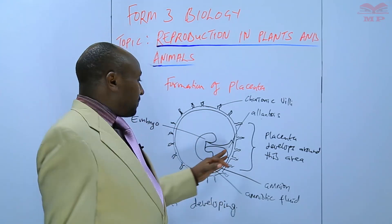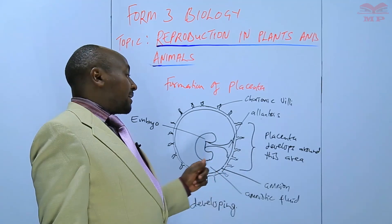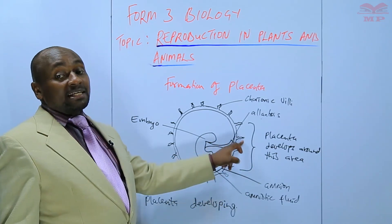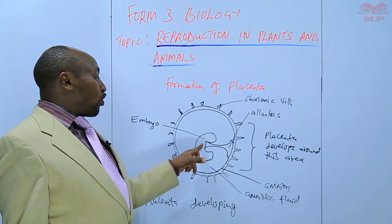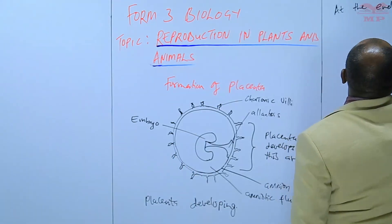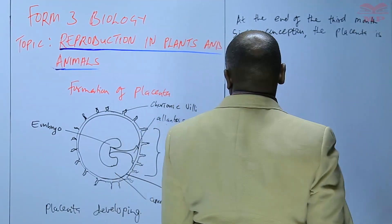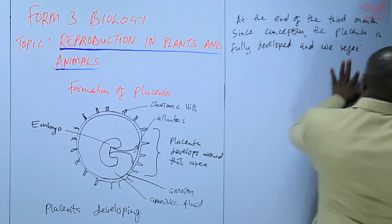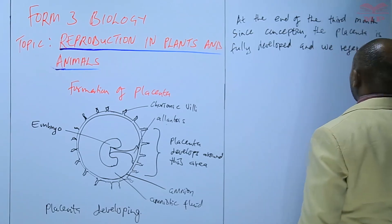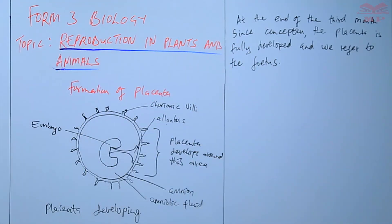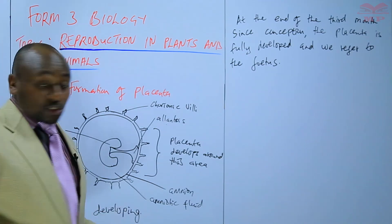The placenta develops such that towards the end of the third month of pregnancy — the third month of the gestation period — the placenta is fully developed. At that stage we no longer call it the embryo but we now call it the fetus, because it has already developed the placenta. So at the end of the third month the placenta is fully developed and we refer to it as the fetus.